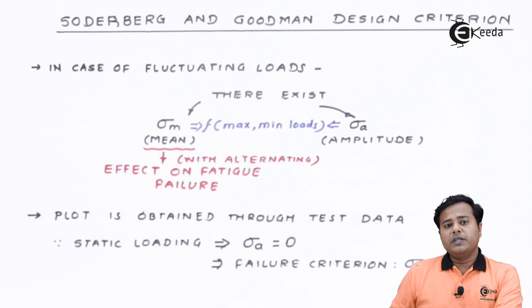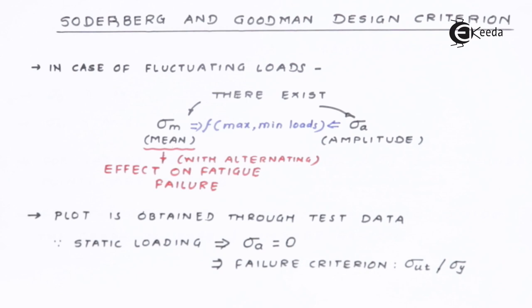The plot is obtained through the test data. There are two important things to understand. If the loading is completely static, that means there is no variation, then the amplitude stress will be equal to zero. In that case, the failure criteria will be completely based on either the ultimate stress or the yield stress.